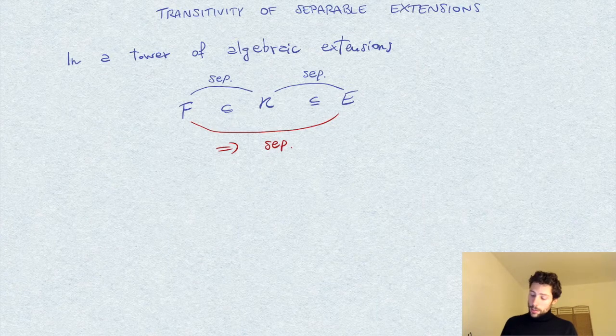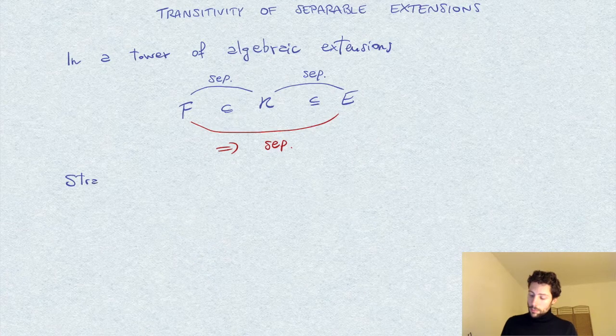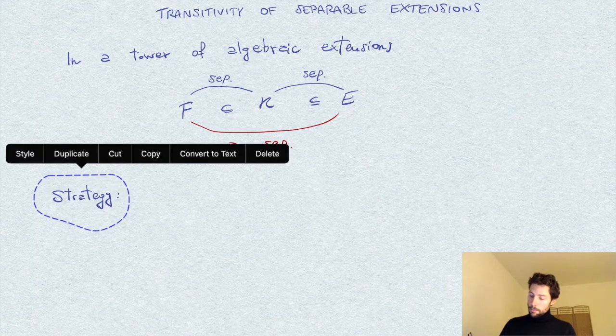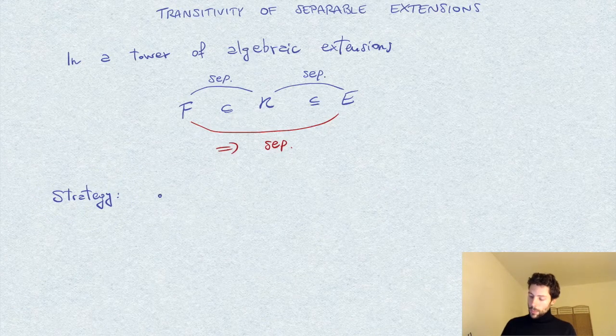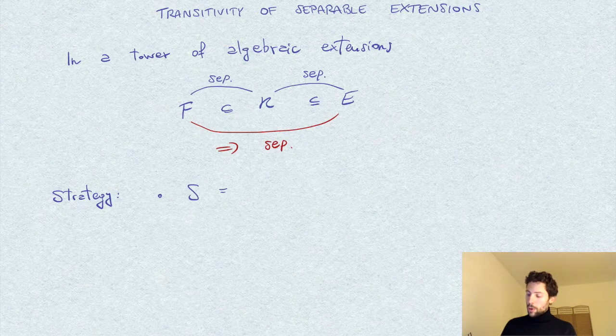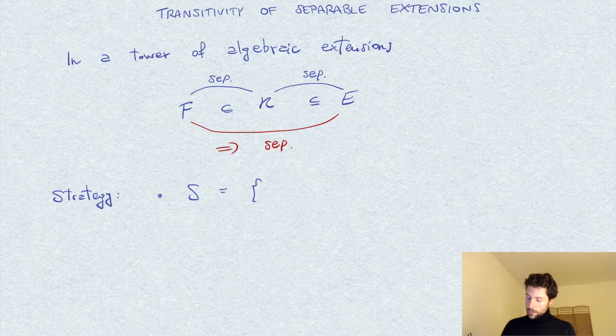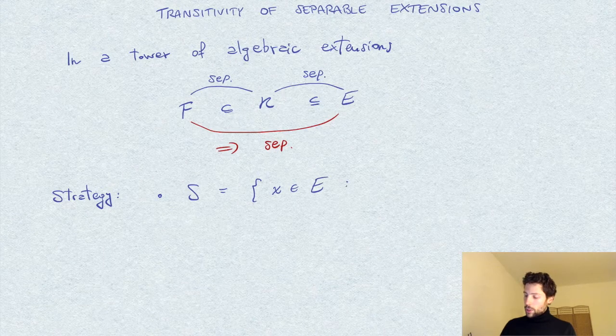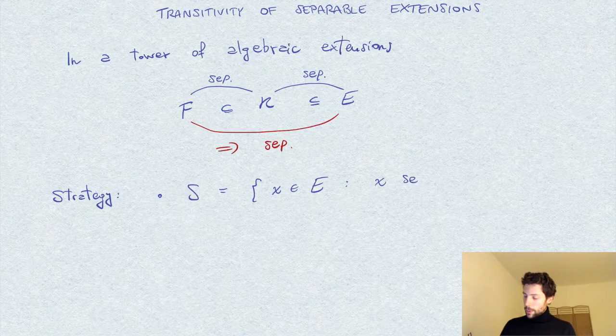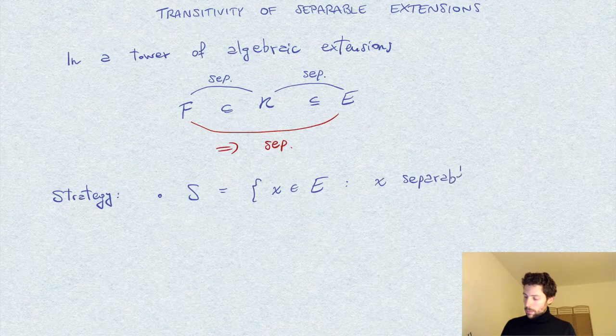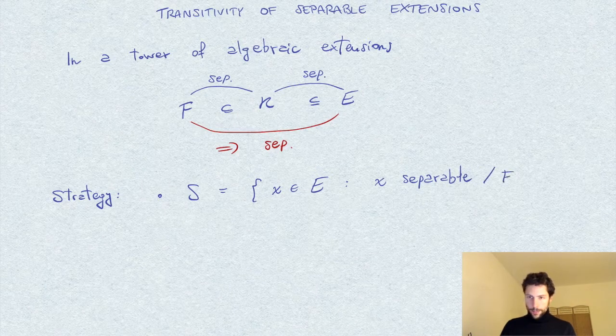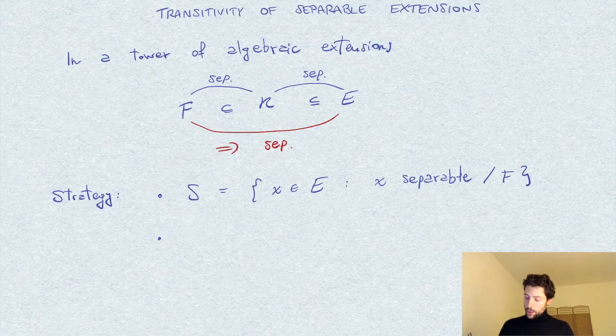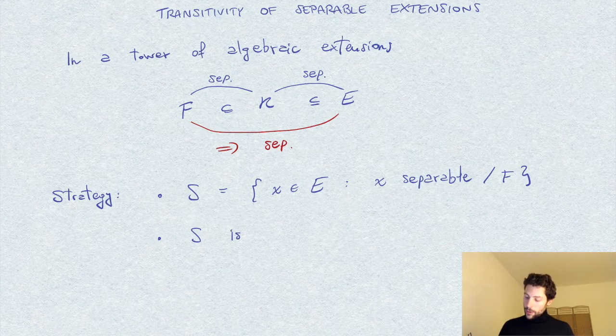So the strategy I would follow is the following. I would like to consider the set S of separable elements in E over F. So the elements in E which are separable over F. We easily show that this S is an intermediate field, so it's a field.